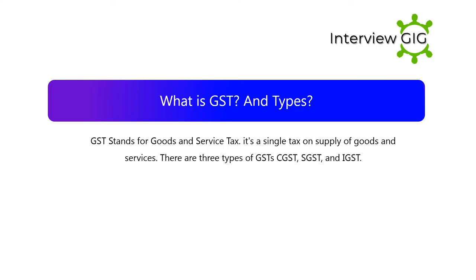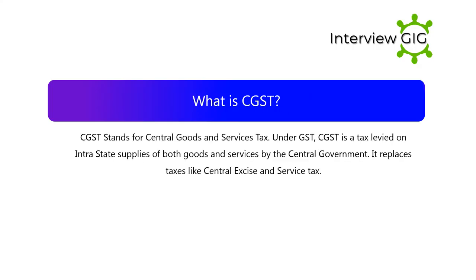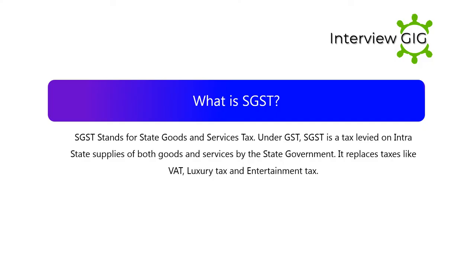What is GST? GST stands for Goods and Services Tax. It is a single tax on supply of goods and services. There are three types of GST: CGST, SGST, and IGST. What is CGST? CGST stands for Central Goods and Services Tax. Under GST, CGST is a tax levied on intrastate supplies of both goods and services by the central government. It replaces taxes like central excise and service tax. What is SGST? SGST stands for State Goods and Services Tax. Under GST, SGST is a tax levied on intrastate supplies of both goods and services by the state government. It replaces taxes like luxury tax and entertainment tax.